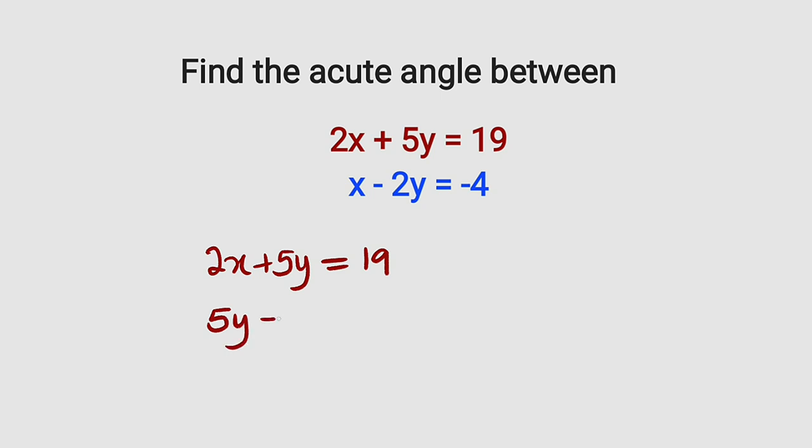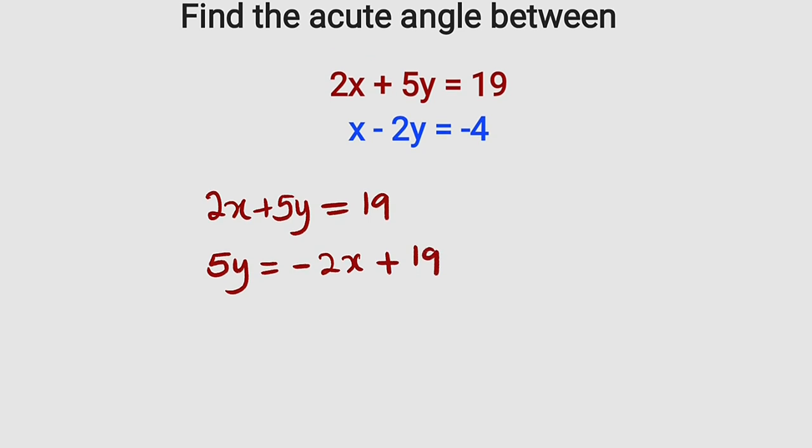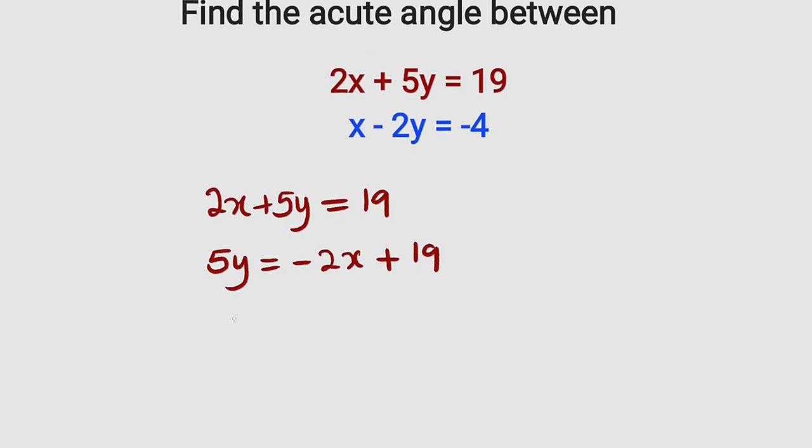we have 5y equal to negative 2x plus 19. We divide both sides by 5, which is the coefficient of y. Therefore, y is equal to negative 2 divided by 5x, then plus 19 divide by 5. You can see the coefficient of x is the slope. So let me call this m1, negative 2 divided by 5.